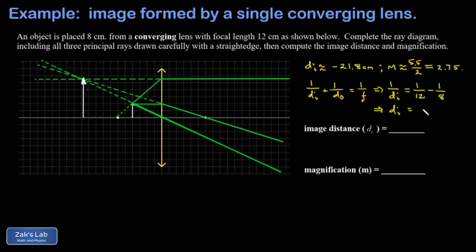And in my calculator, I'm just doing 1 12th minus 1 8th and then taking the reciprocal of that answer, and I end up with negative 24 for this. So the image distance is negative 24 centimeters. So we were off by a couple centimeters in our ray diagram, which is pretty typical for ray diagrams.